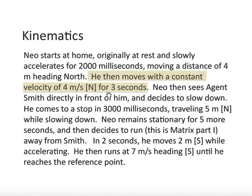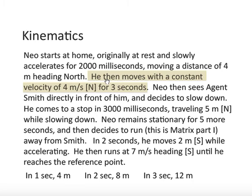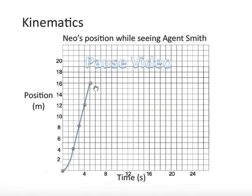Next, he then moves with a constant velocity of 4 meters per second north for 3 seconds. So, it's constant velocity. That's an important term. And what does 4 meters per second north for 3 seconds mean? It means in 1 second he would travel 4 meters, 2 seconds 8 meters, and 3 seconds 12 meters. That's what it means. So, 1 second later, if he starts at 4, he ends up at 8. That's 4 meters per second. Another second later, another 4 meters, and another second later, another 4 meters. Line or curve, I think you know how to connect this. Key phrase, constant velocity, and it's a straight line.